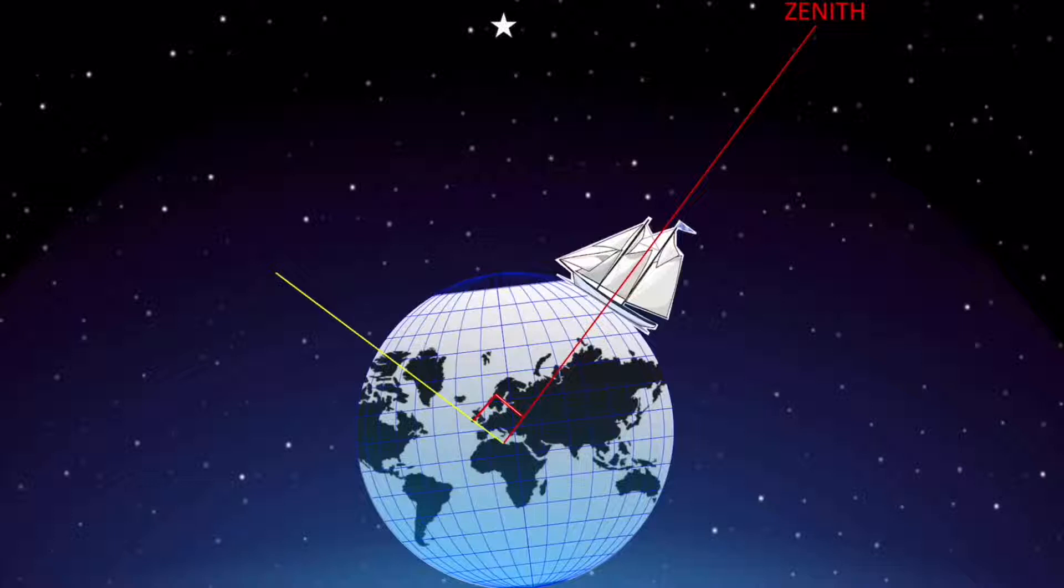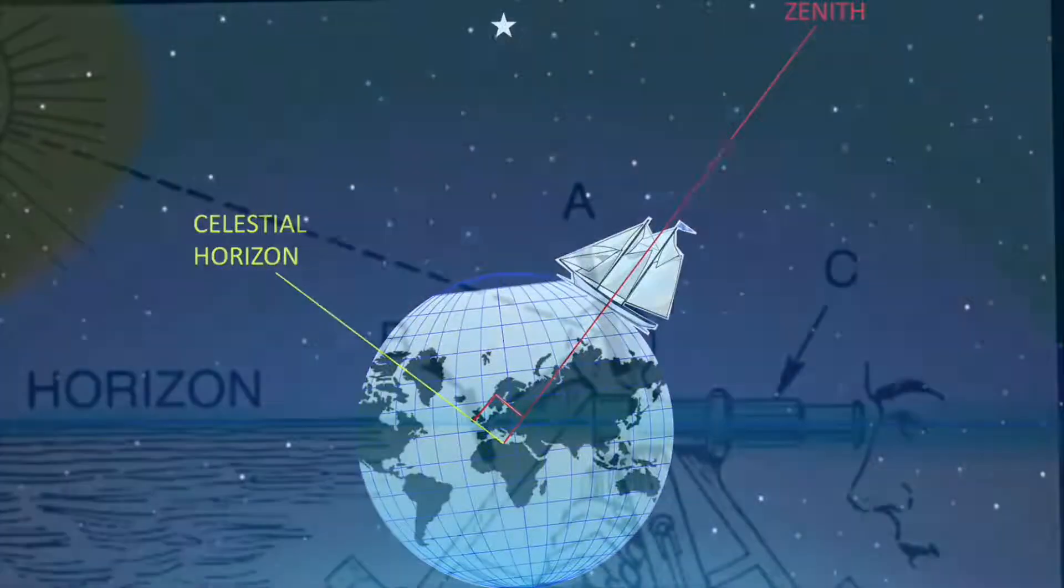And 90 degrees from that you've made up a new horizon, the celestial horizon, which you say is a horizontal plane passing through the earth's center perpendicular to the zenith. So after presupposing all these things you can now use your sextant.